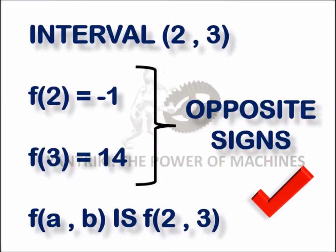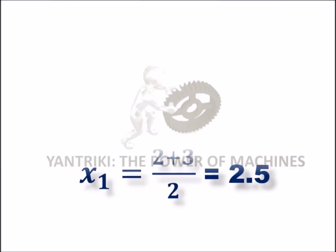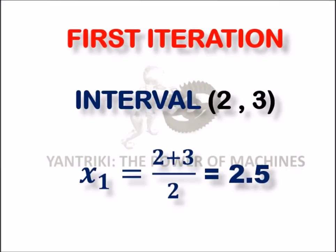Using the bisection method, the approximate root is given by x = (a + b)/2, where a and b are the intervals. As we have to calculate the root using three iterations, the first iteration will be x₁, where we will be considering the interval as [2, 3].